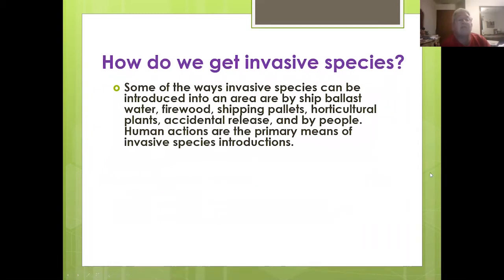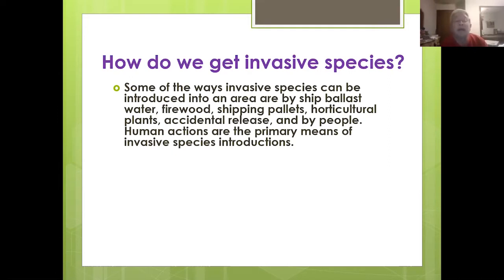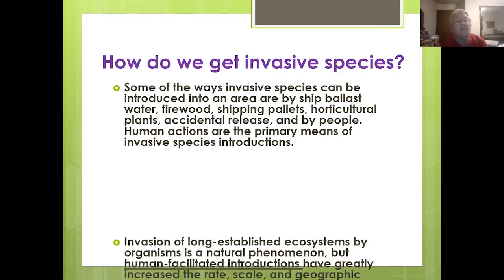How do we get invasive species? Some of the ways they can arrive include ship ballast water — the water a ship takes in and puts out to keep it balanced — firewood, shipping pallets, plants, accidental release, and humans. Humans are the primary means of invasive species introductions now.